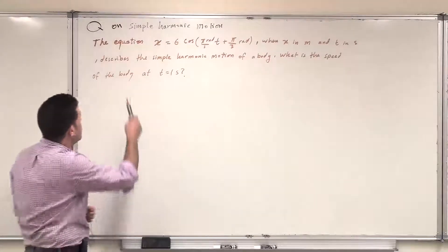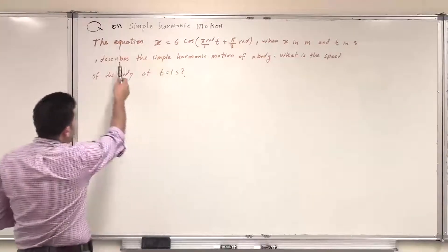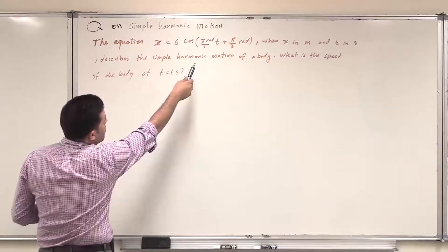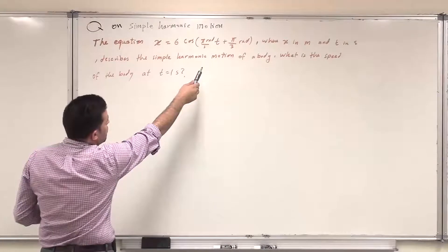As-salamu alaykum. This question is on simple harmonic motion. The equation x = 6 cos(πt + π/3) in radians,